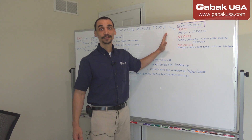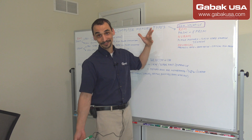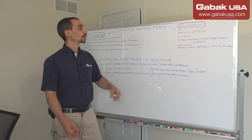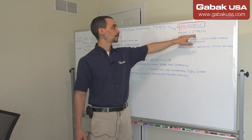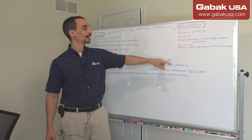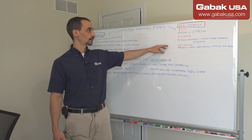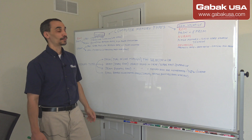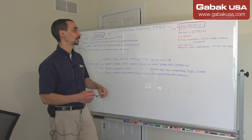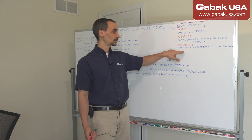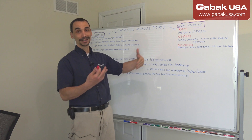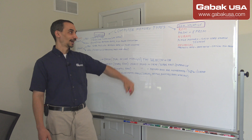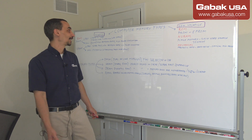Now we have the non-volatile memory. We have ROM, which is usually for the BIOS. We have PROM and EPROM. Then we have NAND, usually used for flash memory, solid state drives, and 3D XPoint. We also have mechanical drives — that includes tape backups, hard drives, optical disks, and all those things.